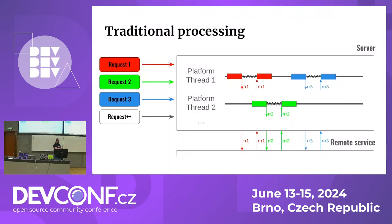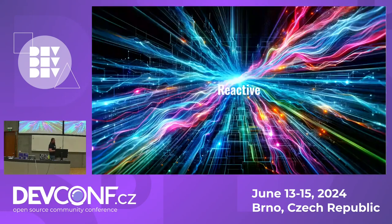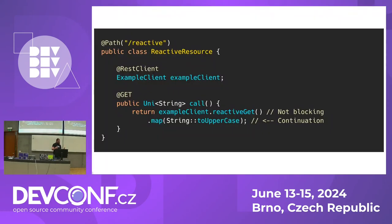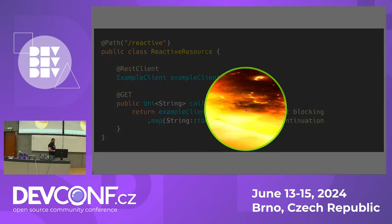Because we can only create that many threads, we came up with the idea of reactive programming. Reactive programming is just a different way of writing the same code using something we call continuations. You need to think a little differently about how you are writing your code.